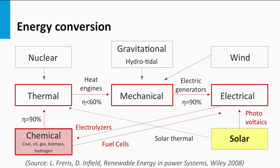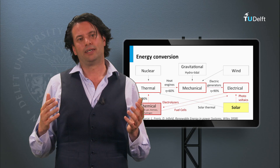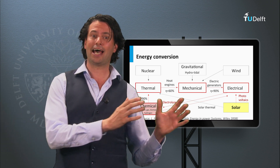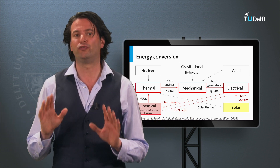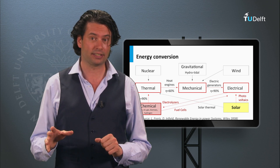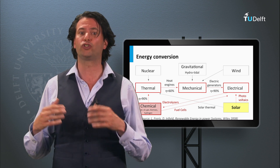Next to generating heat and electricity, solar energy can be converted into chemical energy as well — what we refer to as solar fuels. This is possible by using photovoltaics and regenerative fuel cells, but solar light can also be directly converted to fuels using photoelectrochemical devices. This means we can convert solar energy into electricity, heat, and chemical energy. In weeks 2 to 5 we will discuss photovoltaic conversion, and in week 6 the solar thermal and solar fuel routes.